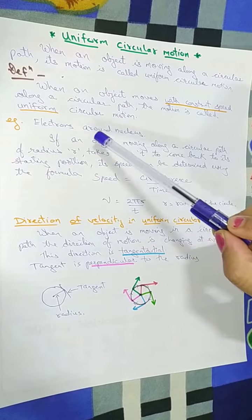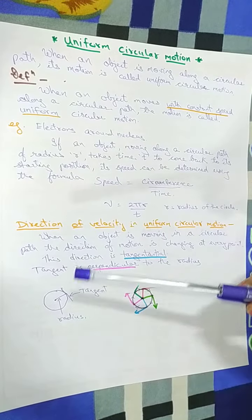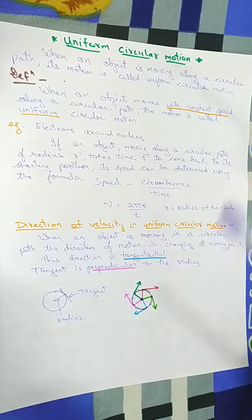Examples we can take: electrons around a nucleus, or the planets around the sun, or the hands of the clock.